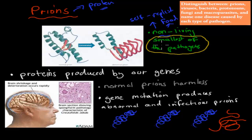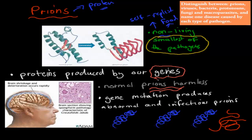So we need to know the differences. Prions are non-living and they are extremely small — the smallest of all the pathogens. These proteins are produced by our genes, so we produce these ourselves. We don't really know what the function of prions is — we don't fully understand them yet. But we know that normal prions are harmless. However, if our gene which creates the prion is mutated, that produces an abnormal and infectious prion. So here the blue is our normal one and the red is our infectious abnormal one.